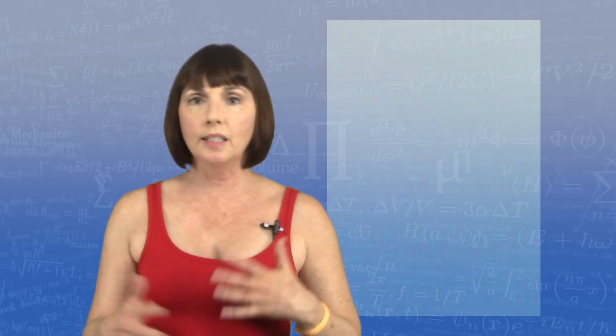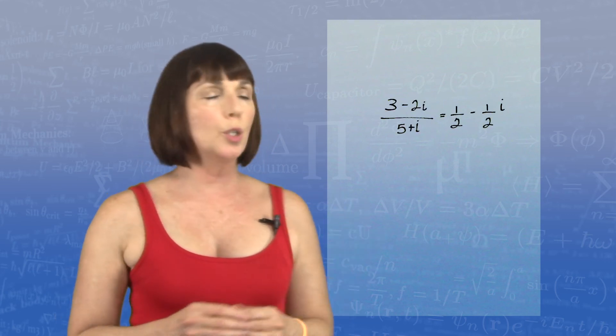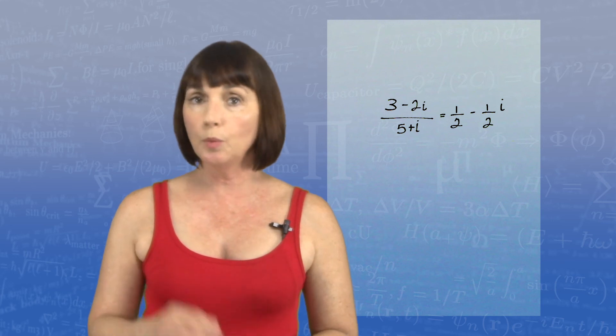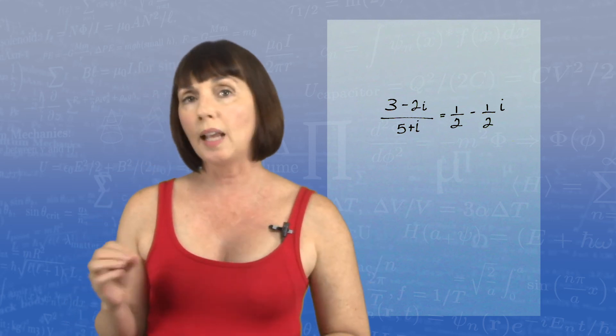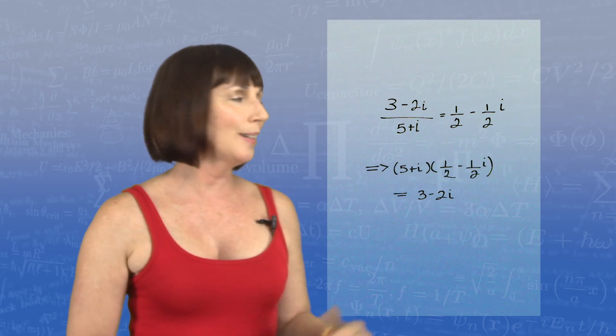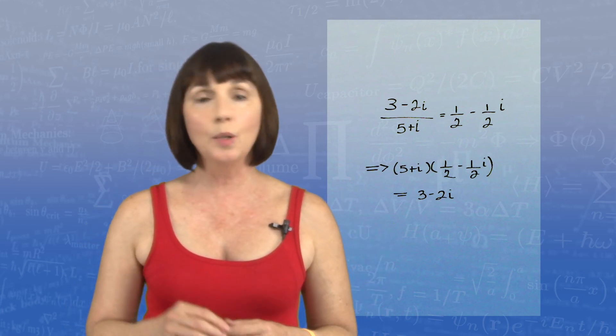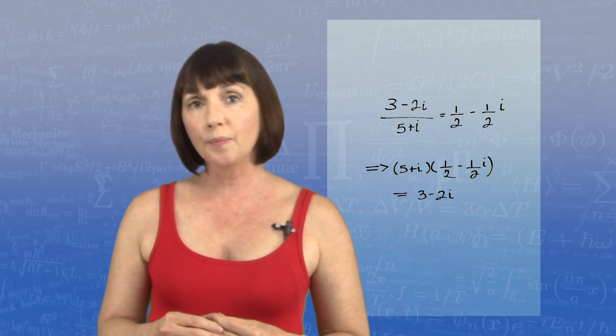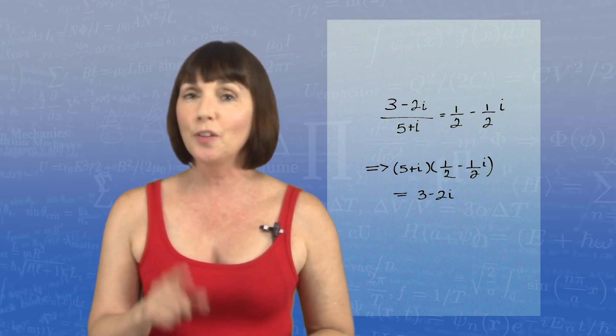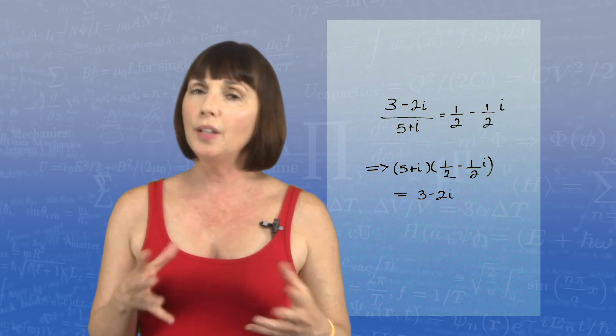Now if it seems like we've been simplifying rather than doing division — just getting that i out of the denominator — consider this: we saw that 3 minus 2i over 5 plus i equals 1 half minus 1 half i. That implies 5 plus i times 1 half minus 1 half i equals 3 minus 2i. Do that multiplication and prove to yourself that statement is true, and you'll see we've actually been doing division all along.